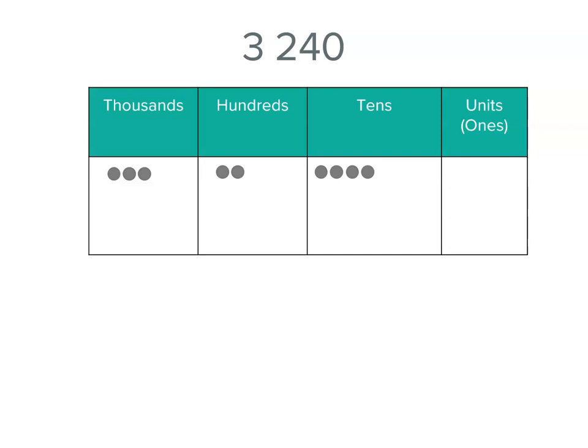So let's see what that means we can do because we can still partition our number. There are 3,000 plus 200 plus 40. So that helps us for solving some problems.